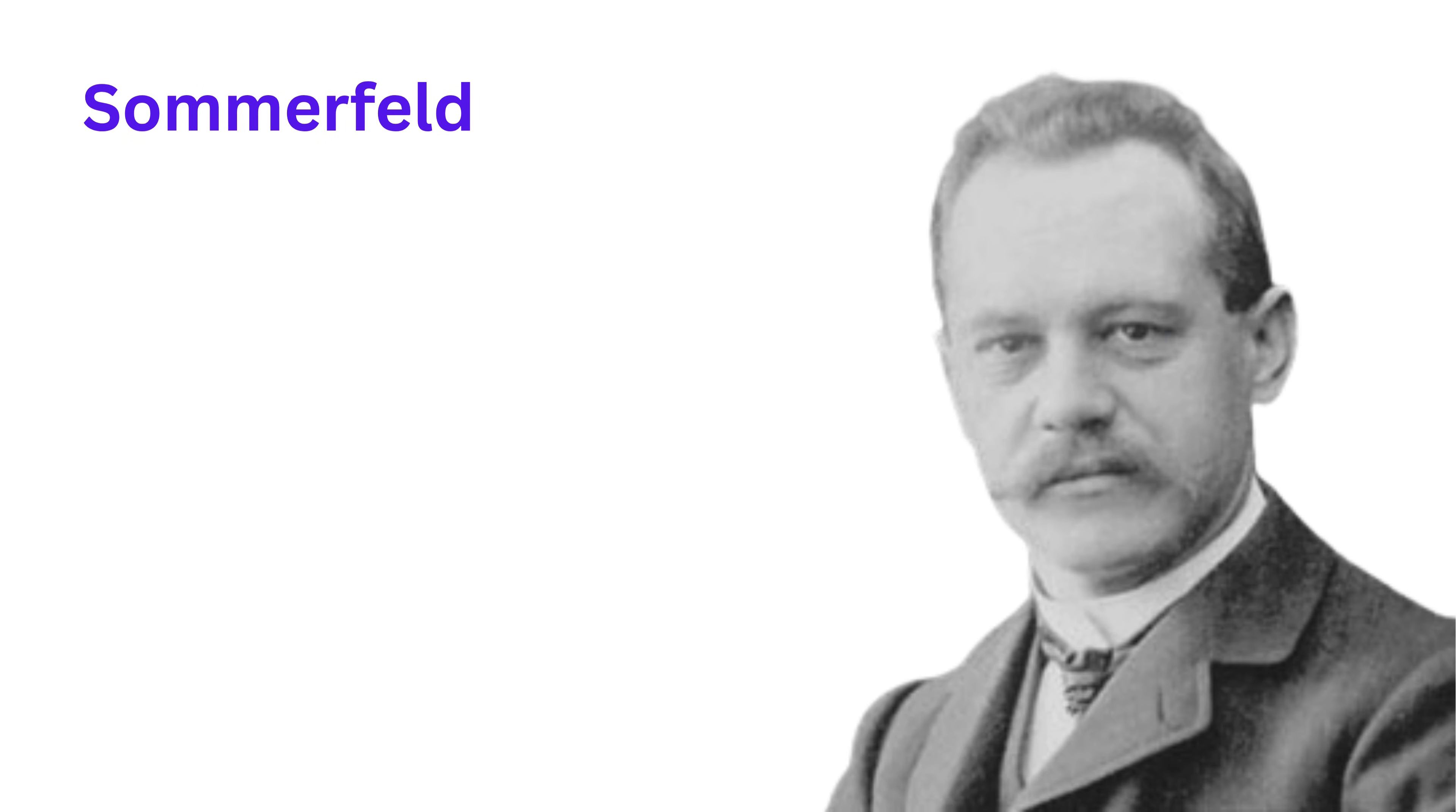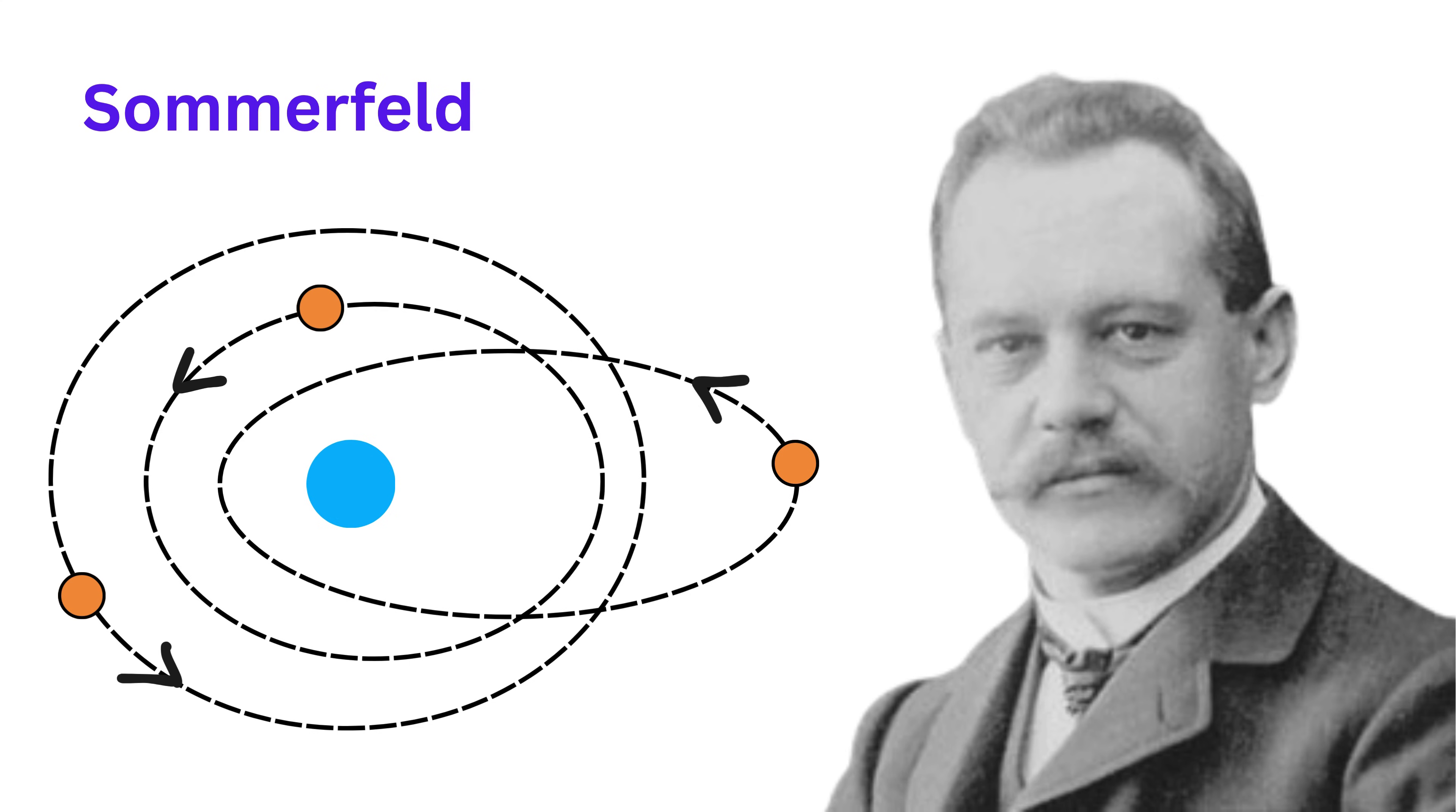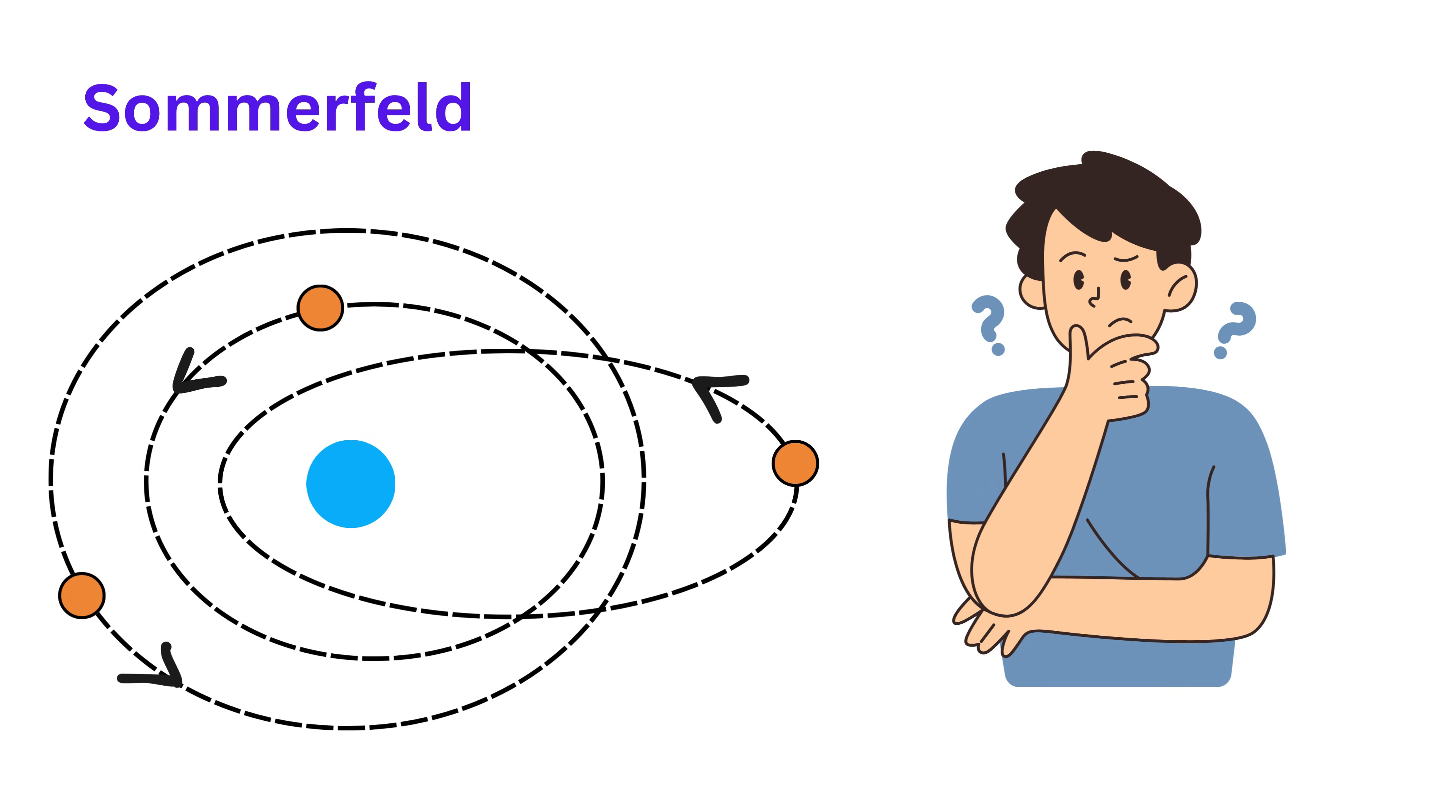Another scientist named Sommerfeld came along and said that electrons don't just move in perfect circles. He said they can also move in elliptical paths, like stretched out circles. Why this matters?